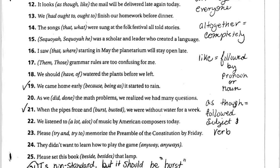We talked about subordinating conjunctions in that basic grammar PowerPoint, which is available to you through Live Grades — sent to everyone in a mass message. Like would be followed by an object or used as the verb in certain situations. For example, you could say mauve is like purple, but not mauve is as though purple.